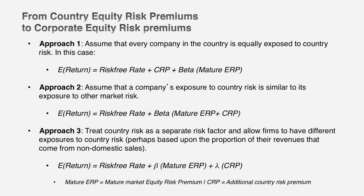Why would you need this? It's not just to value companies within a country. There are three ways you can use country risk premiums. In the first approach, you start with a risk-free rate plus beta times a mature market premium, then add the country risk premium. In the second approach, you bring the country risk premium inside the brackets and multiply by beta — if beta is close to 1 the results are similar, but with beta greater than 1, the second approach gives a higher number. A third approach separates country risk premium from the mature market premium and estimates how exposed your company is to that country risk.